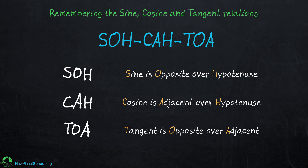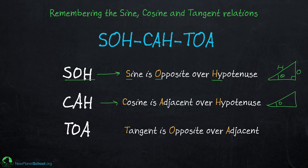So here's what we're going to remember: SOHCAHTOA — that's what you're never going to forget for the rest of your life. SOH means sine is opposite over hypotenuse. Here's our right triangle — sine of theta is opposite over hypotenuse, and that is SOH. CAH — cosine is adjacent over hypotenuse. Given our angle, cosine is adjacent over hypotenuse — that's CAH. And then TOA — tangent is opposite over adjacent.